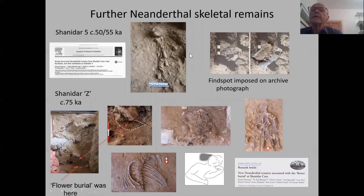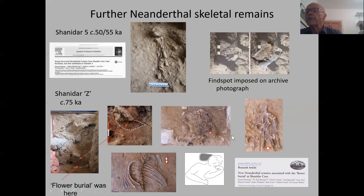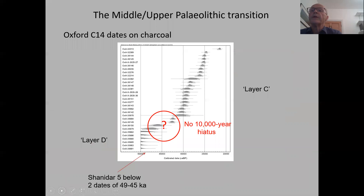Surprisingly, against all our expectations, we've found further Neanderthal skeletal remains. Emma Pomeroy, the project's biological anthropologist, has shown that some clearly belonged to Solecki's Shanidar 5 — articulated remains dated to around 50,000 to 55,000 years ago. Down at the lower depth, more bones were found in the section right by where Shanidar 4 was found. We've exposed the upper articulated bones of an adult Neanderthal, published earlier this year in Antiquity, led again by Emma Pomeroy.